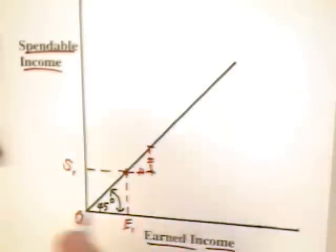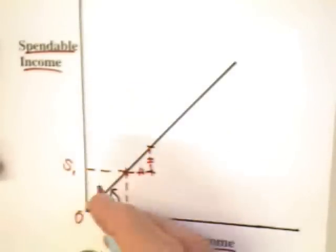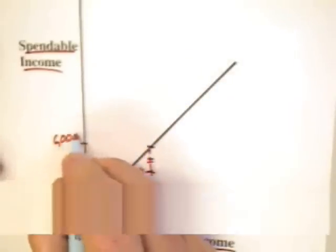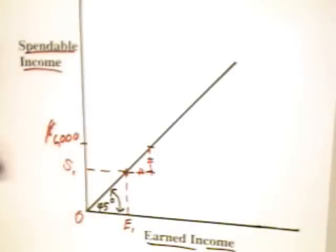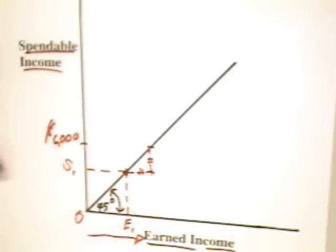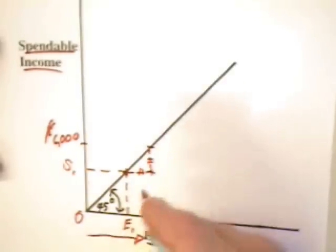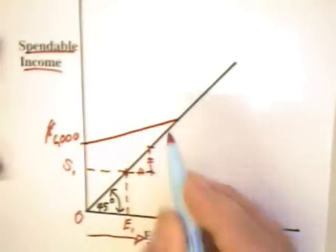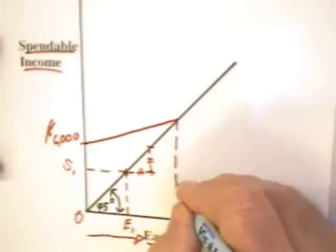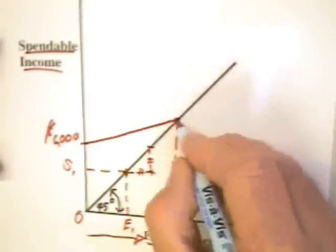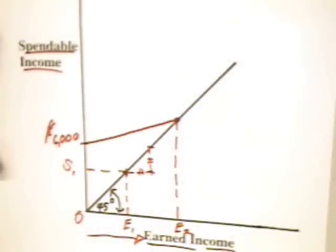What is typically done is that at very low income, say zero, workers will get some benefits, say $6,000 if they earn zero income. But as the income goes up, the earned income goes up, the benefits are tapered off. As a consequence, there may be some break-even income, for example E2, where benefits go to zero. At that point, at the break-even income of E2, the spendable income of the workers is exactly equal to E2.